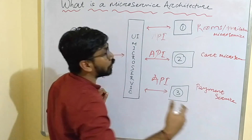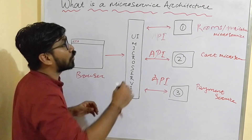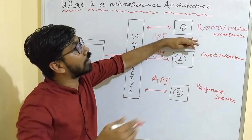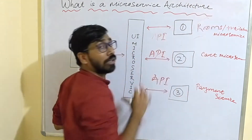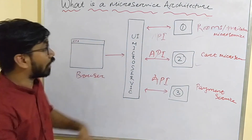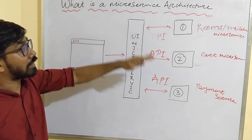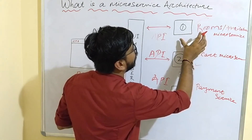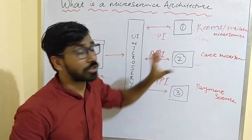One group of developers can handle one service and a second group can handle another service, enabling continuous deployment. If any changes are needed for the first service, the first group of developers can deploy that service independently. Each service also has its own independent database. In microservice architecture, scaling is easy — if a service needs more memory, we can scale that particular microservice independently.